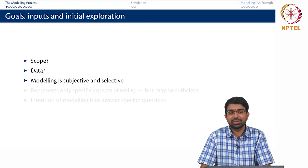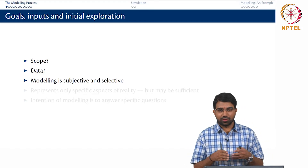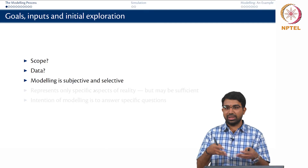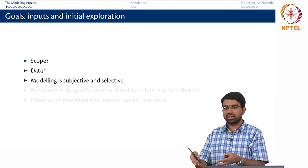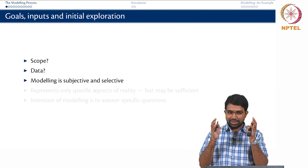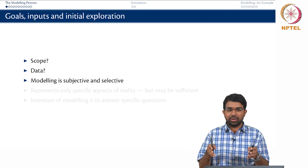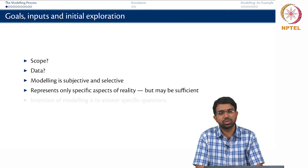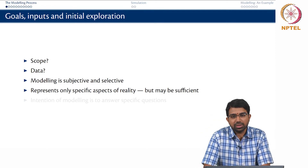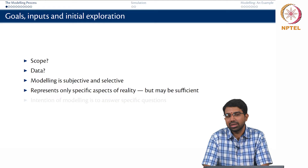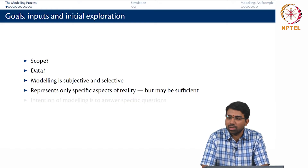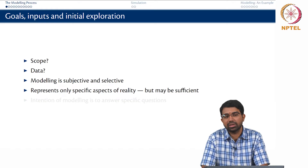There are multiple assumptions in the Michaelis-Menten model — for example, it is assumed that there is free diffusion and there are no spatial heterogeneities. We will look at all of these when we study dynamical systems. For today I am just introducing you to the basic aspects of the model. It represents only specific aspects of reality, but that is usually sufficient because it always depends on what you want to predict. If you want time course predictions, you have to use a dynamic model; if not, you may get away with a static model.